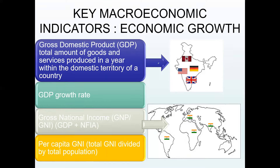GNP, or gross national product, is the GDP of the country after adjusting net factor income from abroad. Net factor income from abroad is the difference between the income earned from abroad by residents of a country, say India, and the income earned by non-residents in the domestic territory of that country.